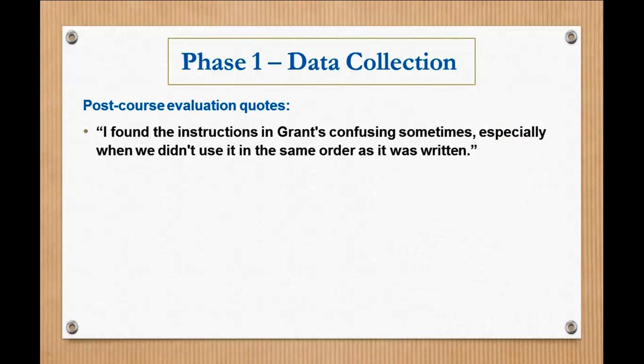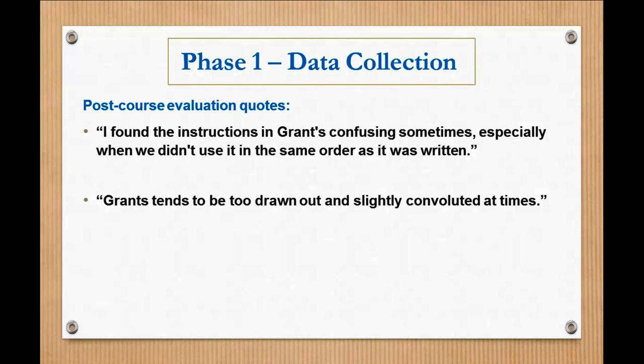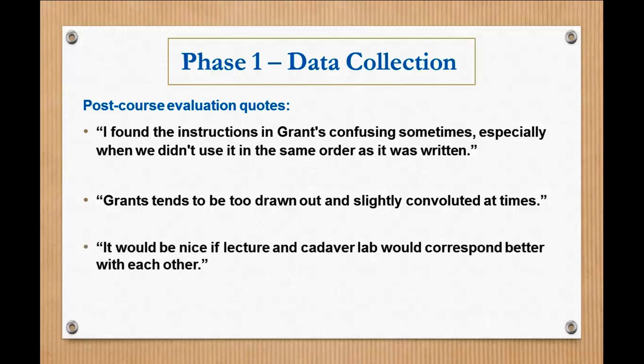Just to highlight some quotes from the post-course survey talking about Grant's being confusing, especially when they had to reorder. So a lot of times we'd have to change the order, omit steps just to fit the needs of our program. Saying that it can be kind of confusing, convoluted to read. And also it would be nice to have the lab material and course material correspond better. So that's another benefit of having a program-specific guide.